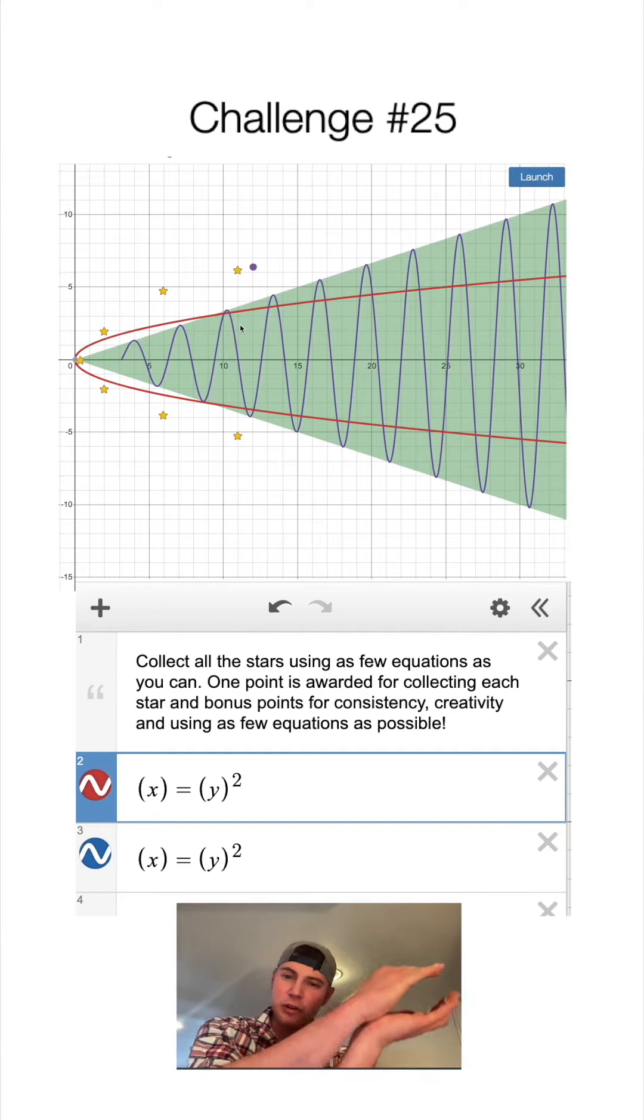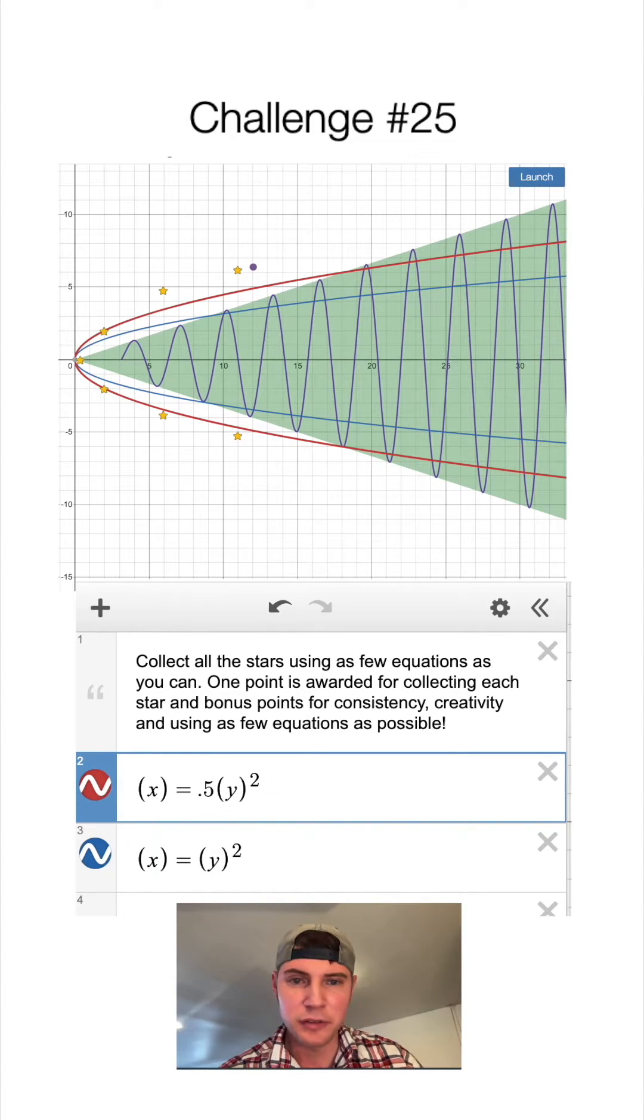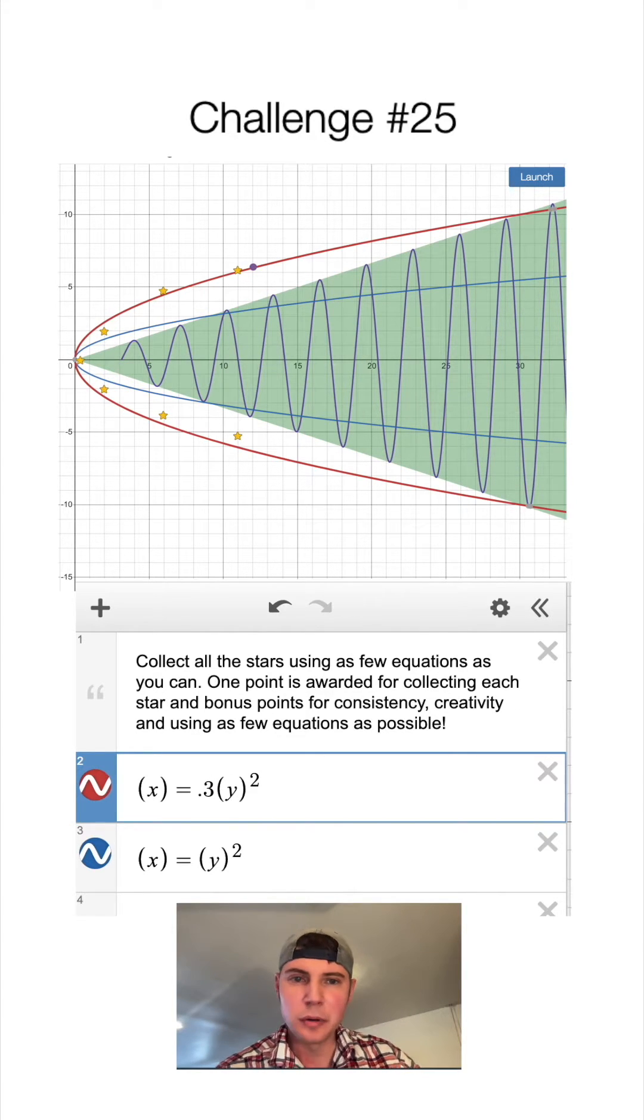So right now this is super skinny. In order to make it wider, I need to make it shorter in the Y direction. So the way to make it shorter in the Y direction is put a multiplier here. We'll try something like 0.5. That is not wide enough. 0.4, 0.3. 0.3 will probably do it.